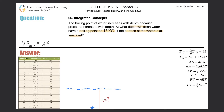The reason absolute pressure is better here is because it incorporates more ideas. Atmospheric pressure only talks about the pressure of the air, whereas absolute pressure takes into account atmospheric pressure and also the pressure of any fluid above a particular location. It's a more inclusive concept.